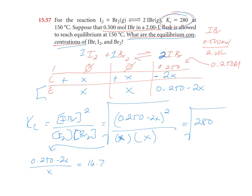And now I simplify and solve for x. So multiply both sides by x. I get 0.250 minus 2x equals 16.7x. Add 2x to both sides. Now I'll go down here. I get 0.250 equals 18.7x. Divide both sides by 18.7. And x is, I think it's 0.0133.